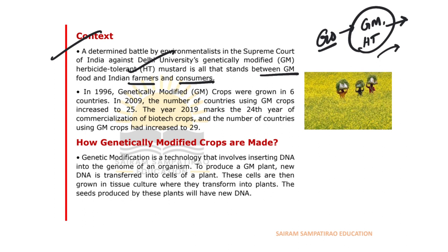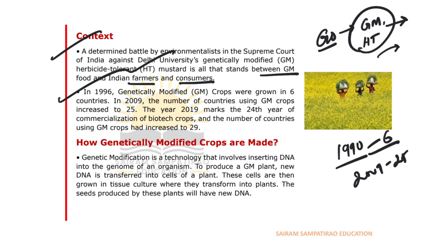In 1996, GM crops were grown in six countries. This started in the early 1990s in very few countries. By 2009, the number of countries using GMO crops increased to almost 25. By 2019, the number of countries cultivating GMO crops increased further to approximately 29–30.